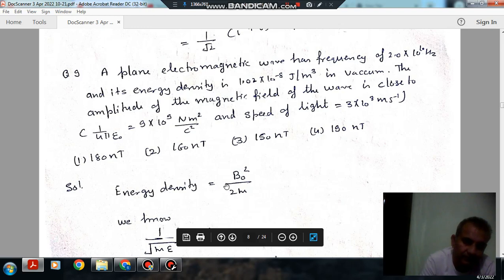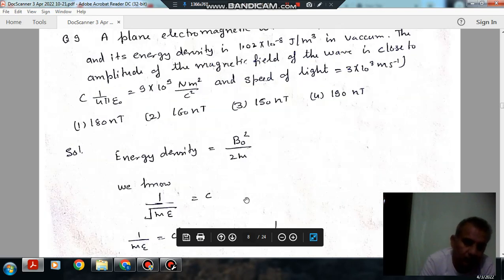So we know that the energy density in magnetic field is given by B0 squared by 2 mu.